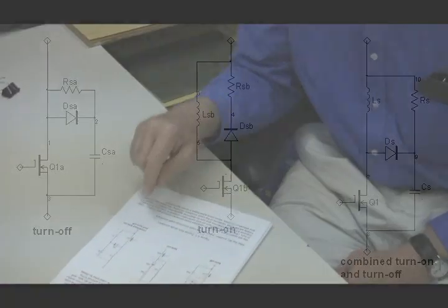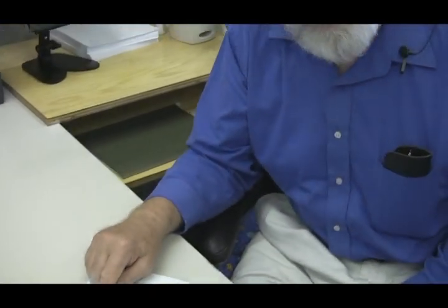We'll find that there are some very interesting optimization problems that have to be solved with combination snubbers. In fact, some of the most popular turn-on-turn-off combination snubbers — the very most popular one — cannot actually be optimized at both ends. It's always a compromise, a trade-off, and that particular trade-off will be treated carefully in this chapter.